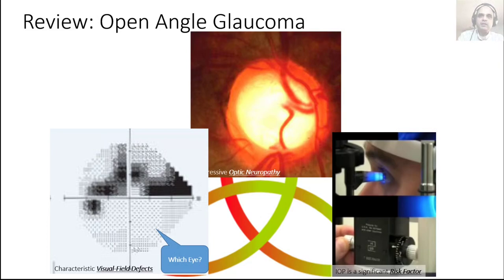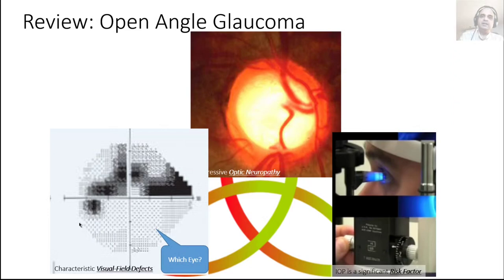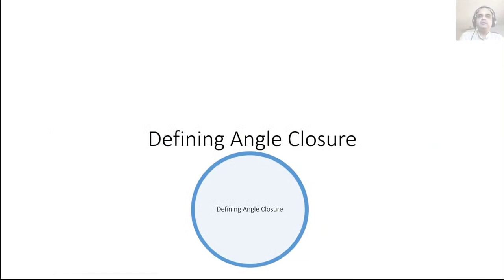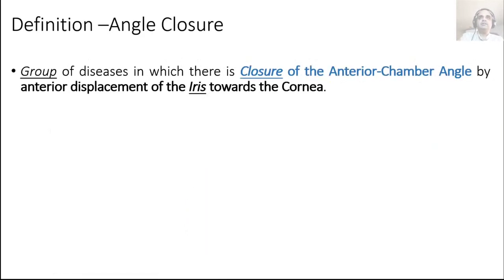When we talk about glaucoma in terms of angle closure, we are talking about a condition in which you must have optic neuropathy and visual field effects. Just high pressure alone is not enough to call the disease glaucoma — you need neuropathy and visual field effects even in the setting of angle closure. Let's now define angle closure.